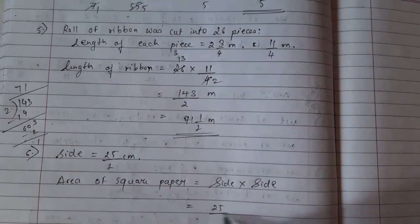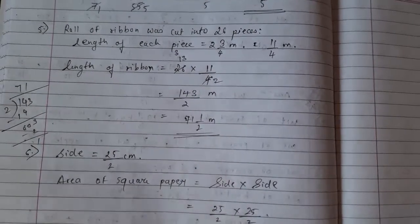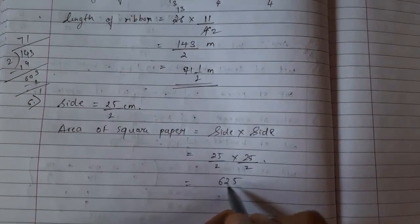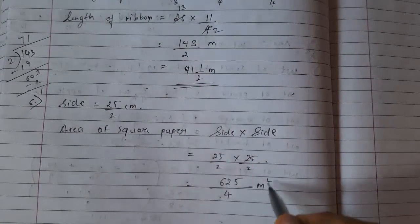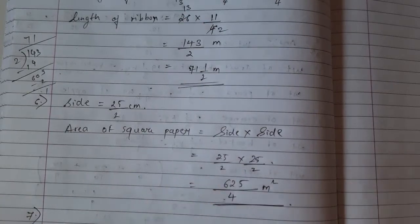We have to multiply 25 upon 2 again with 25 upon 2. So 25 square is 625, and this 2 to the 4. So this much meter square paper you will require. Let us move ahead.